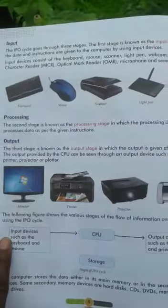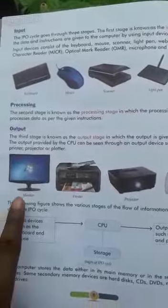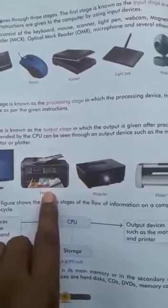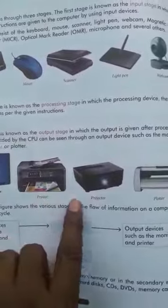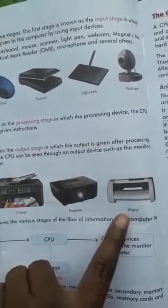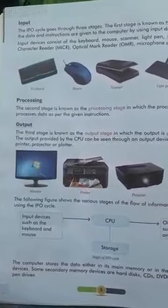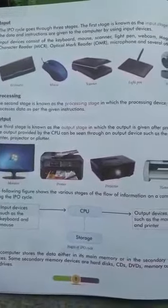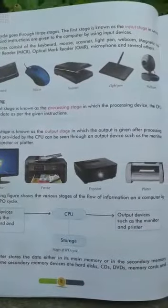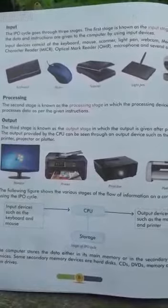The output provided by the CPU can be seen through output devices such as the monitor, printer, and projector. This one is the monitor, this one is the printer, this one is the projector, and this one is the plotter. The following figure shows the various stages of the flow of information on a computer using the IPO cycle.